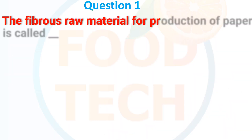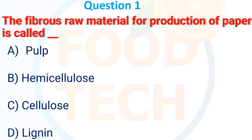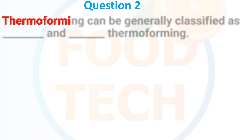The fibrous raw material for production of paper is called: (a) Pulp, (b) Hemicellulose, (c) Cellulose, (d) Lignin. The answer is (a) Pulp.